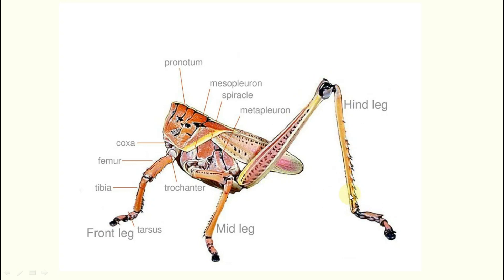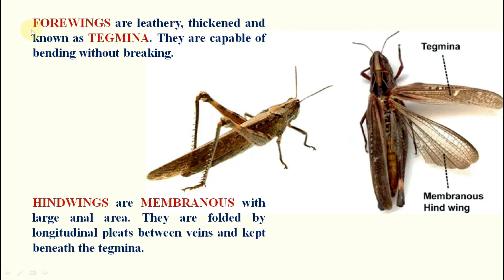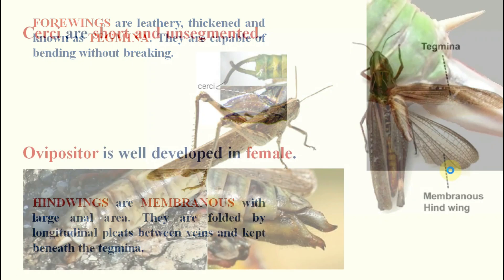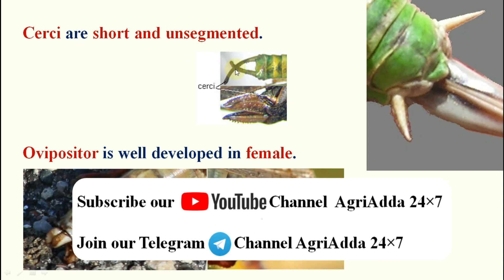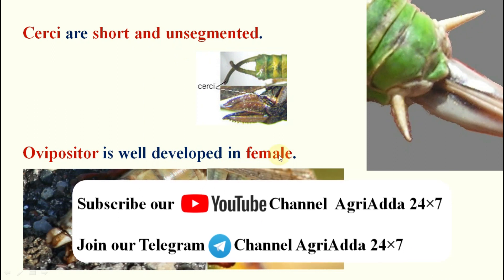The fore wings are leathery, thickened, and known as tegmina. They are capable of bending without breaking and rest over the abdomen. The hind wings are membranous and useful for flight. The cerci are short and unsegmented.